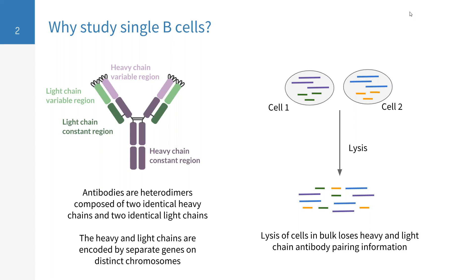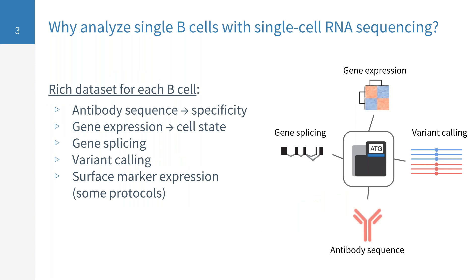The reason we need to study single B cells lies in the structure of antibodies themselves. Antibodies are heterodimers composed of two identical heavy chains and two identical light chains. Each of these chains is encoded by genes that lie on separate chromosomes. If you were to perform a bulk assay and lyse the cells, you would lose that critical pairing information of heavy and light chains. So why should we use single cell RNA sequencing on B cells?